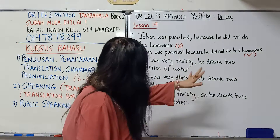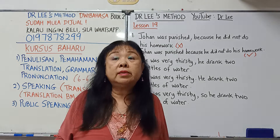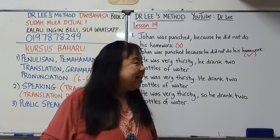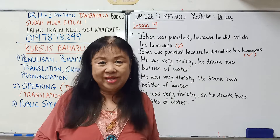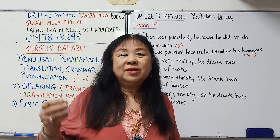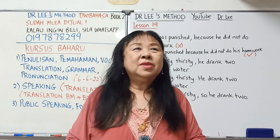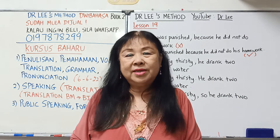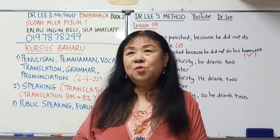第二个例子："he was very thirsty, he drank two bottles of water." 如果我这样讲的话，你绝对会说是对的。他很口渴，他喝了两瓶水，意思是对的。